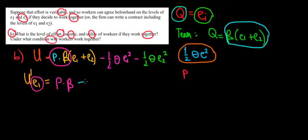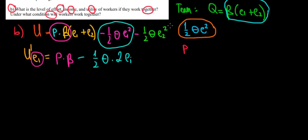For minus one half theta e1 squared, when we differentiate with respect to e1, we get minus one half theta times two e1. For the final term with e2, we're differentiating with respect to e1, so the derivative is zero.